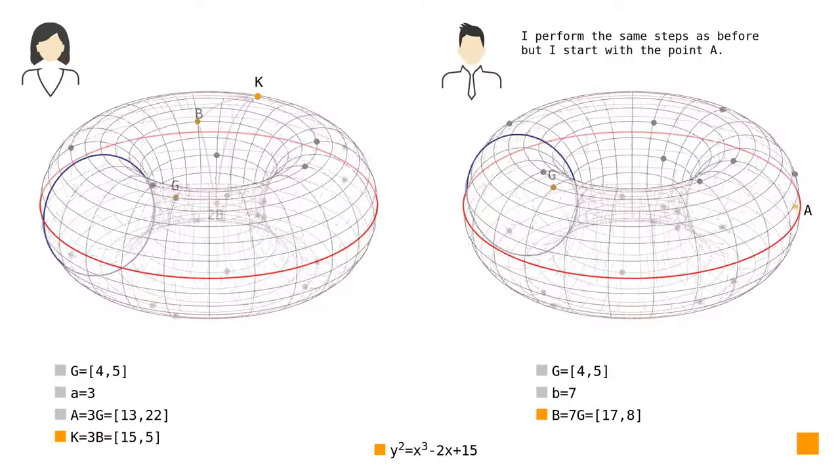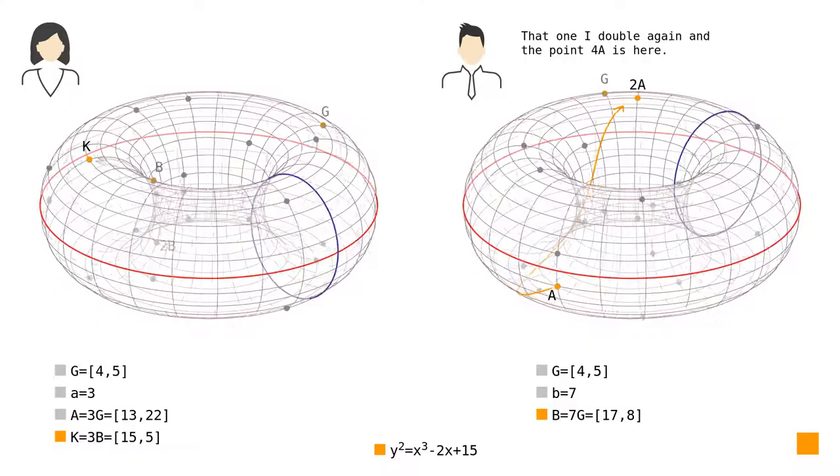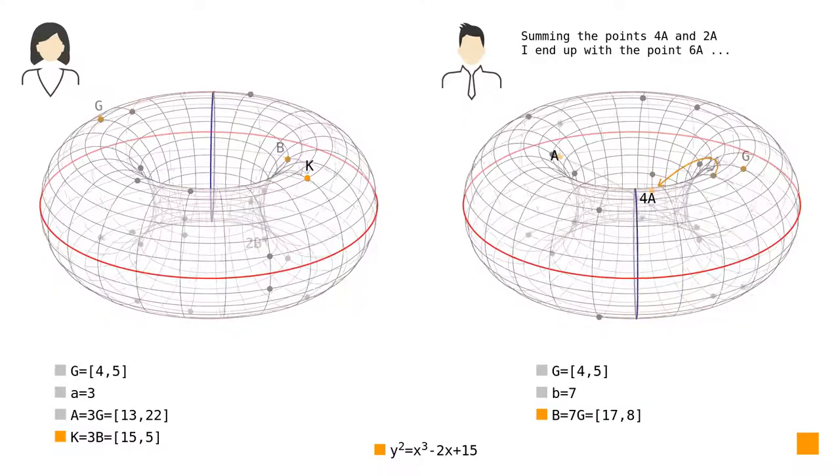Now Bob does the same. I perform the same steps as before but I start with the point A. By doubling it, I get the point 2A. That one, I double again and the point 4A is here.